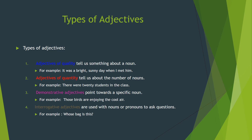The fourth type is interrogative adjectives. 'Interrogative' is used when we ask a question. So interrogative adjectives are used with nouns or pronouns to ask questions. For example, 'Whose bag is this?' 'Bag' is the noun and 'whose' is its adjective, and its type is interrogative.